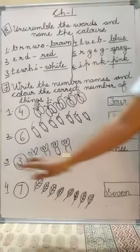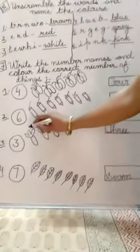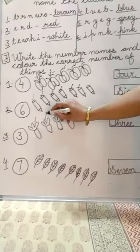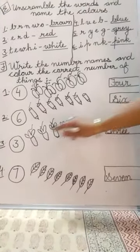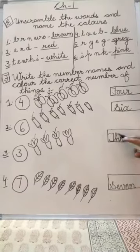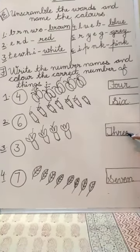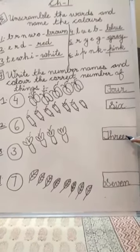Third bit is what is given in the circle? Three is given. So we have to first color three carrots. One, two and three. We will color these three carrots and then we will write the spelling here. What is the spelling? T, H, R, double E, three.